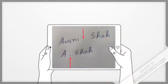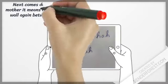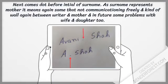Next comes a dot before the initial of the surname. Since the surname represents the mother, this means the person is not open to their mother, and may later have the same problems with their wife and in future with their children, especially daughters.